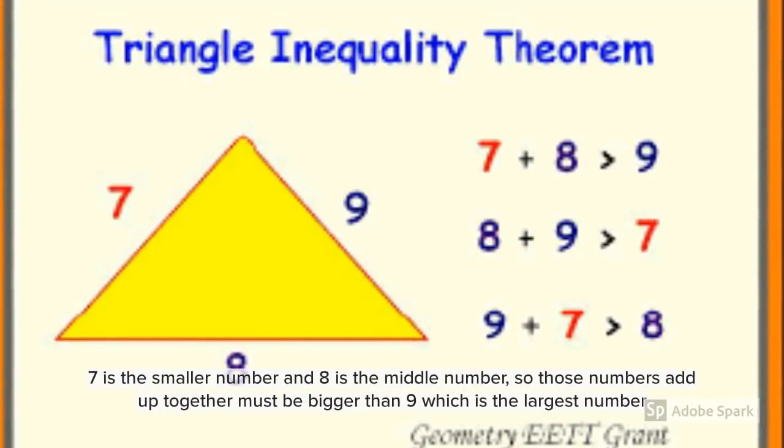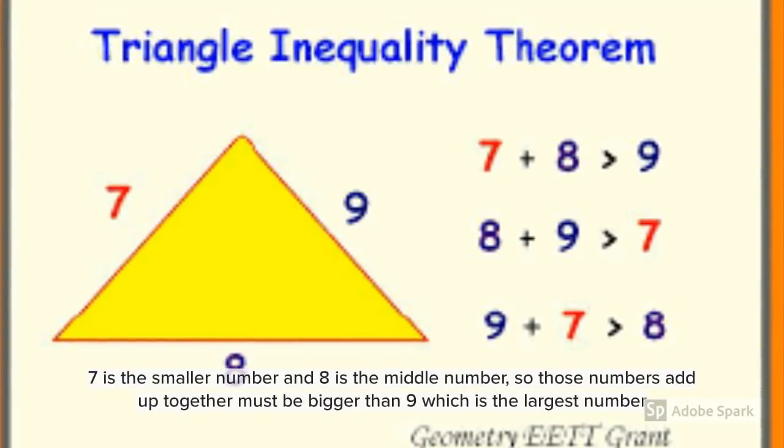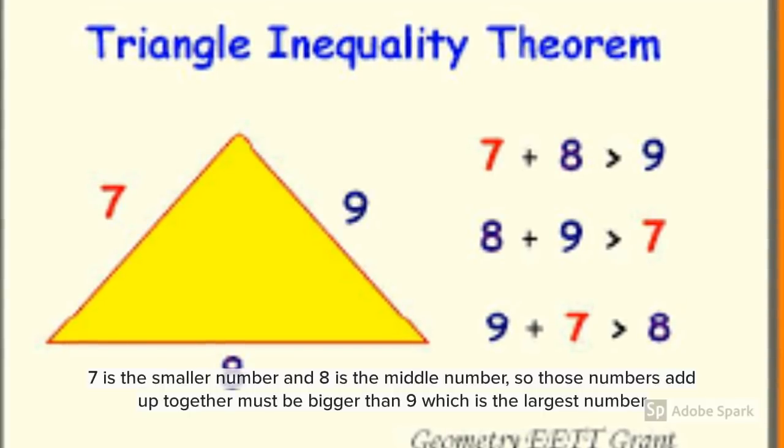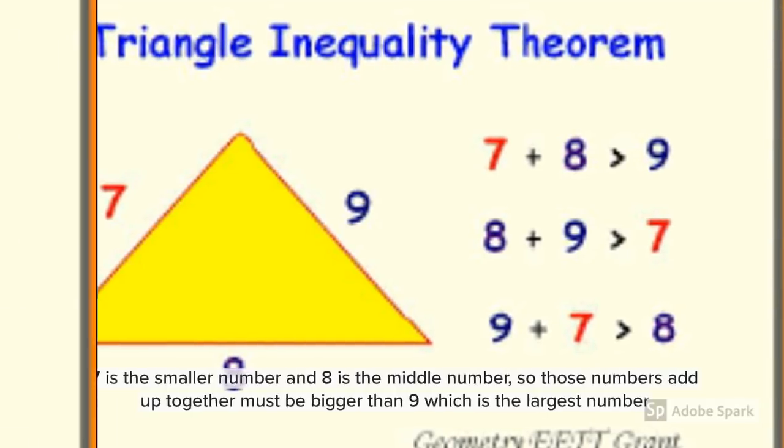7 is the smallest number and 8 is the middle number, so those numbers add up together must be bigger than 9, which is the largest number.